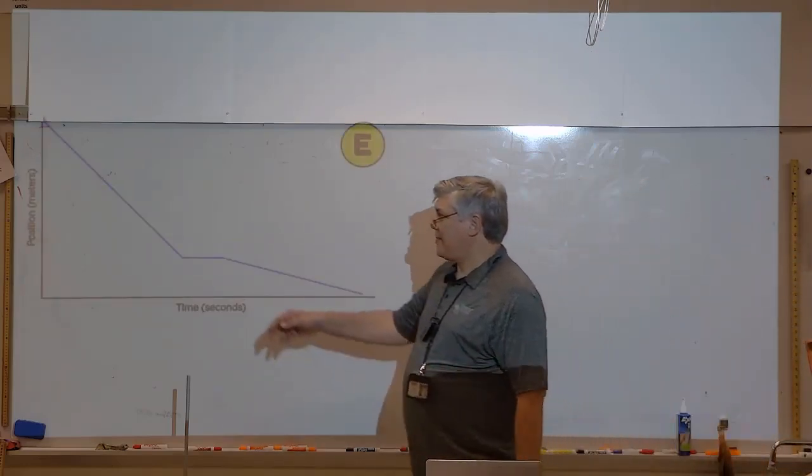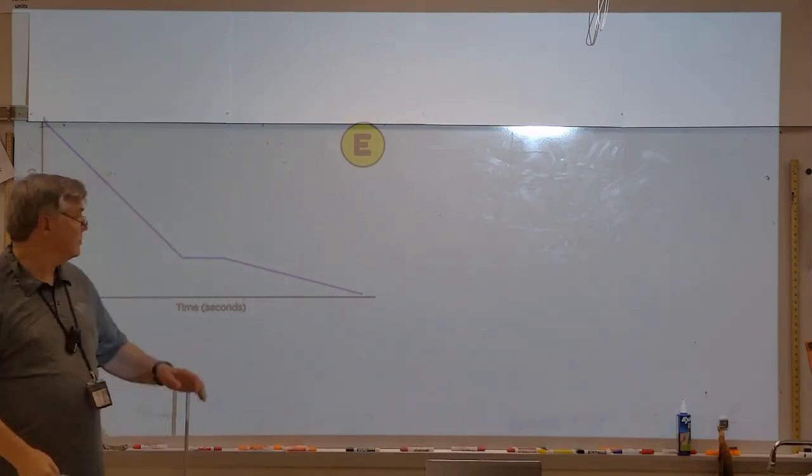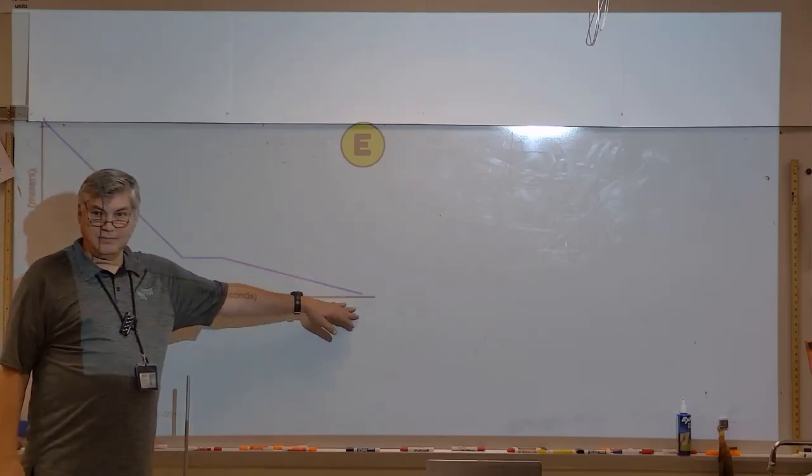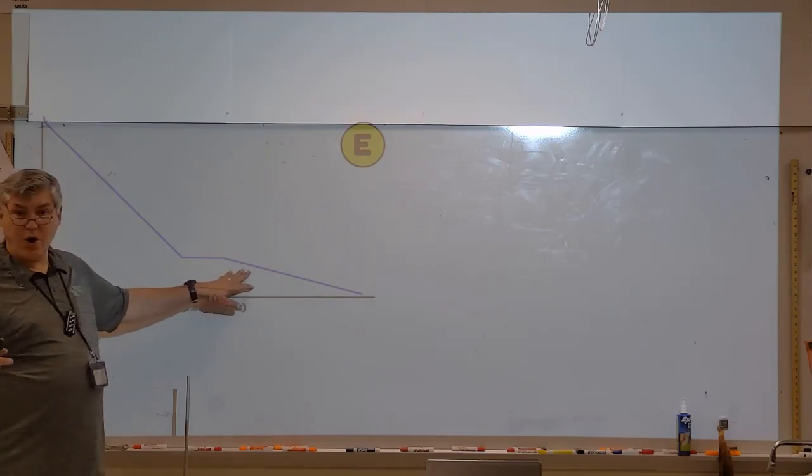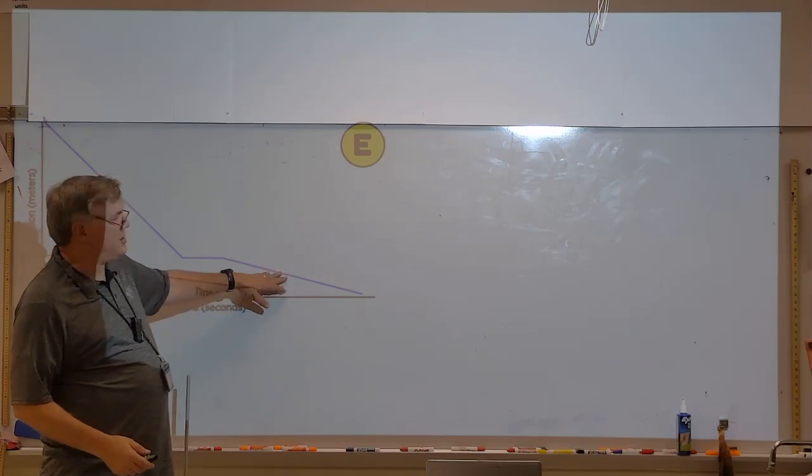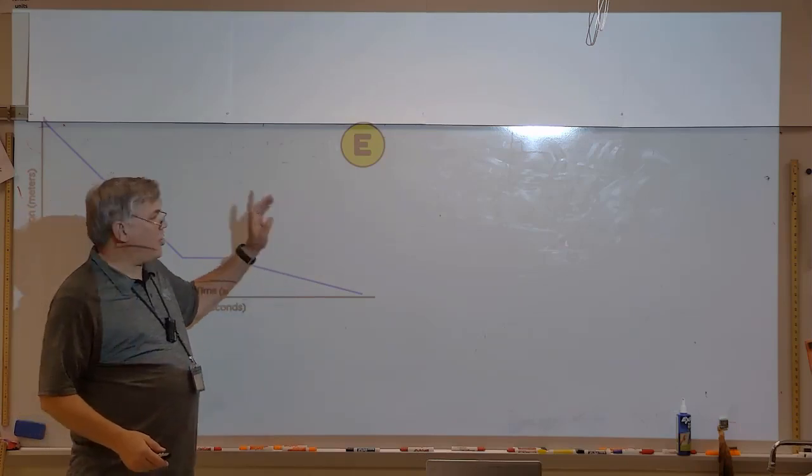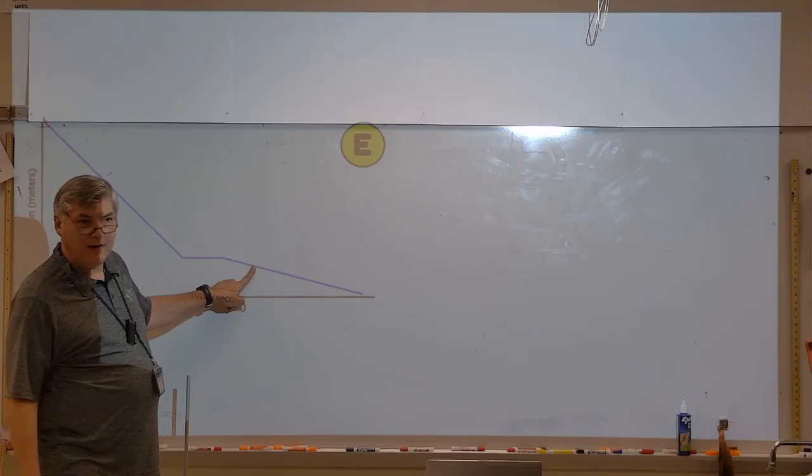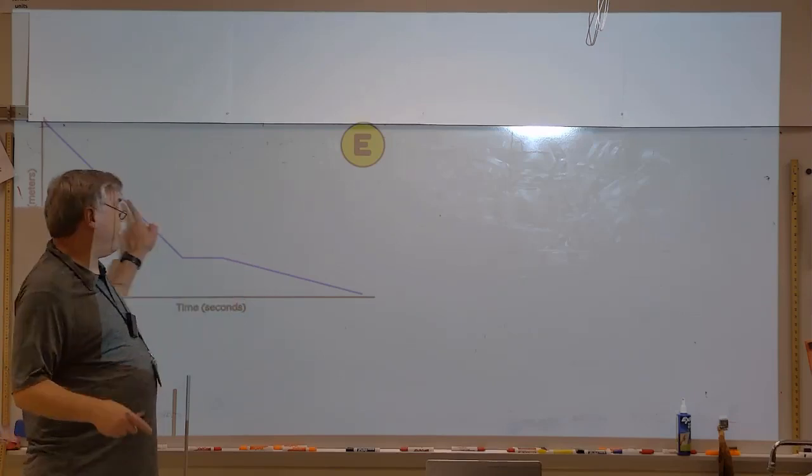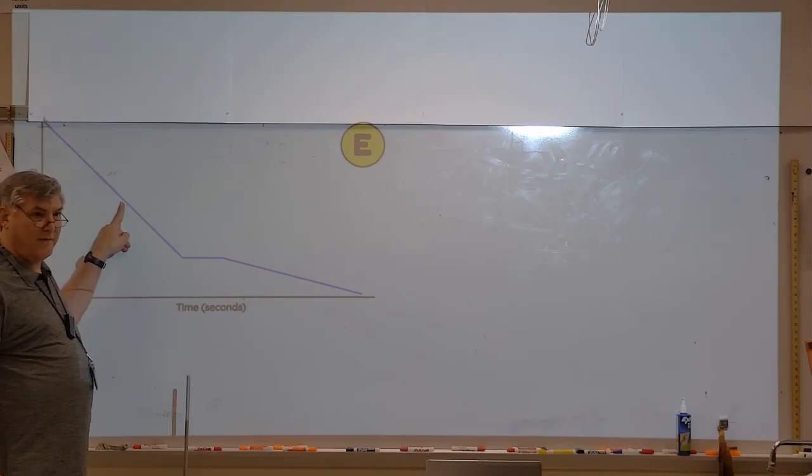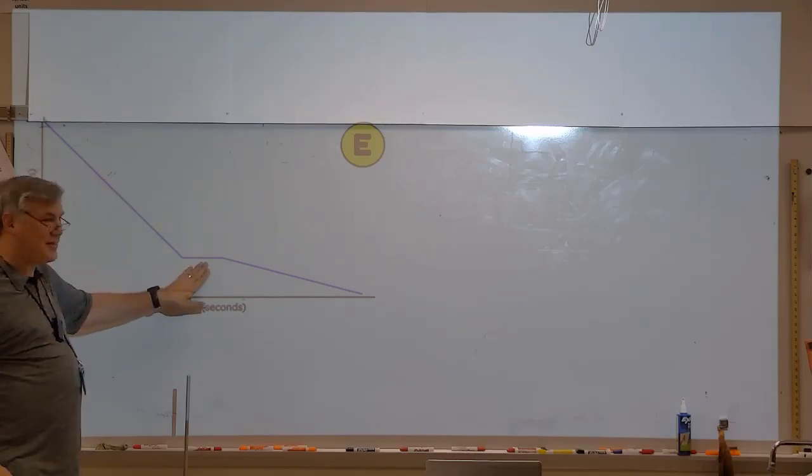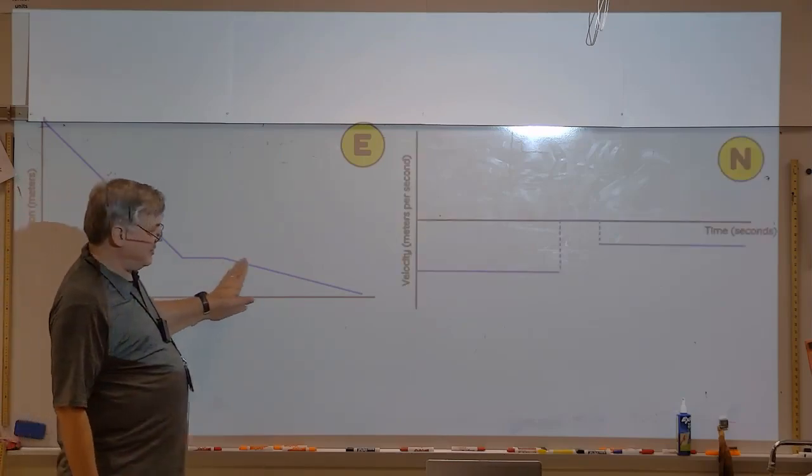All right. Next one. What's happening here? Backwards and then backwards slower. Right. So what will this look like on a velocity time graph? The first line will be above or below? And then? Will it be below this line? It's going. It'll be between this line and this line, won't it? Let's take a look. Okay. So there we go.